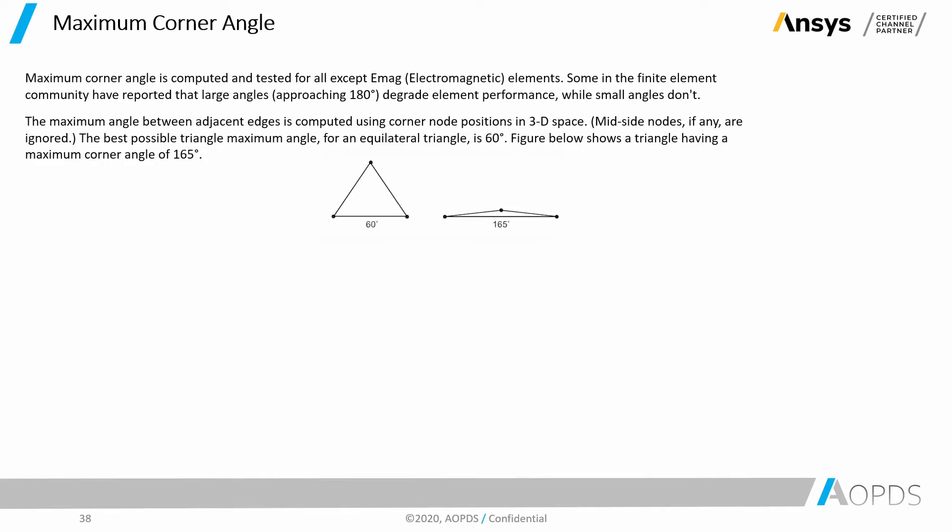The best possible triangle maximum angle for an equilateral triangle is 60 degrees. Figure below shows a triangle having a maximum corner angle of 165 degrees, and as you can see, it's not eye pleasing.